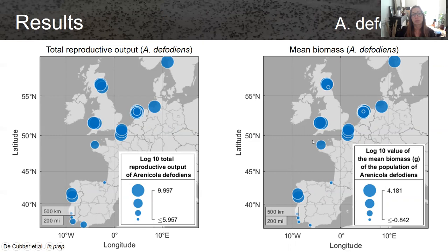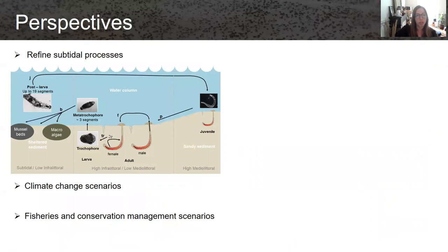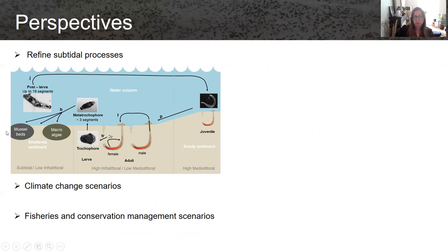The perspectives of this work are that we should refine the subtidal processes, because in this case we considered auto-recruitment and there are no limitations with larval dispersal. We know that since the larvae settle in temporary habitats, if those habitats are not present or favorable then the species will have difficulty recruiting on the beach. This could explain differences in recruitment in some places and should be added somehow to the model.